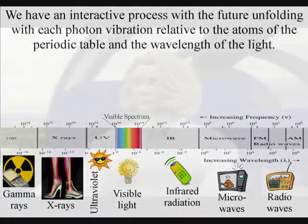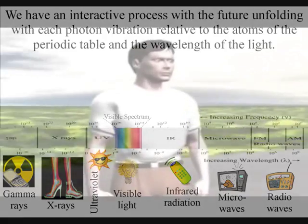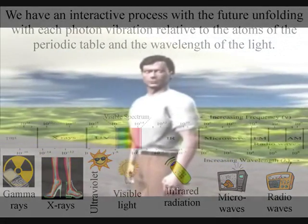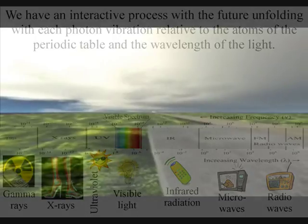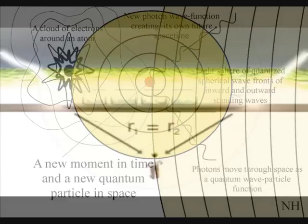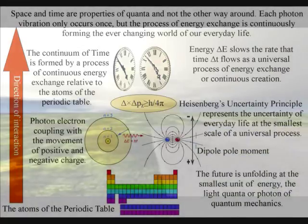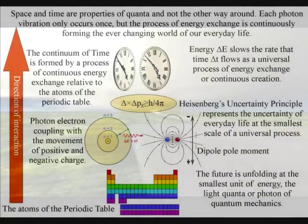Each one of us has an emergent, uncertain future, that will be relative to our position, and the energy and momentum of our actions. Within such a process, it is impossible to say that two distinct events happened at the same time, if those events are separated in space. This is because the future is continuously unfolding, relative to the energy and momentum of each observer's frame of reference.